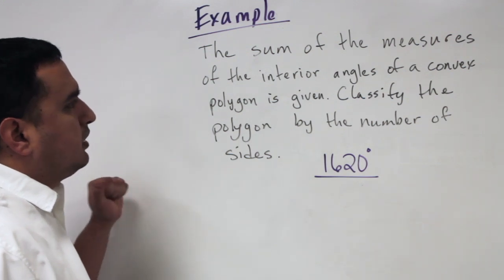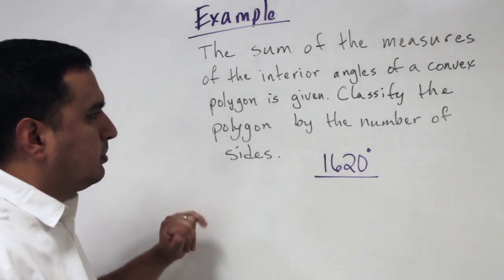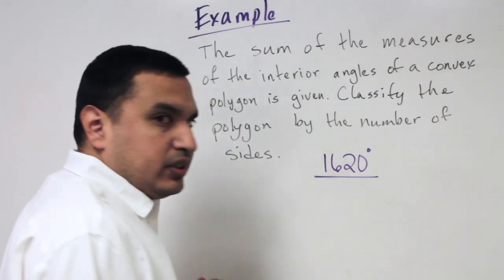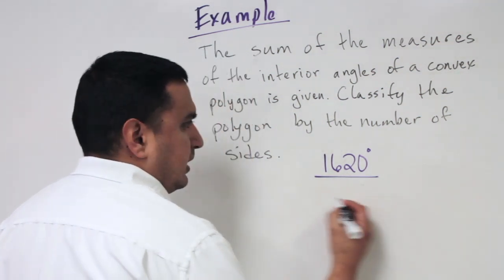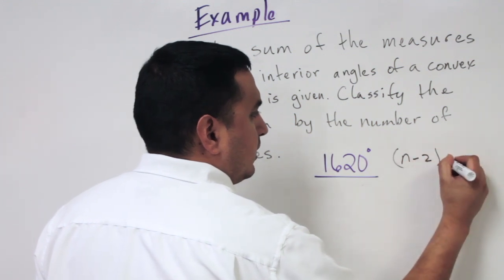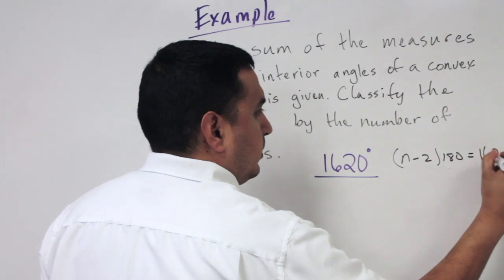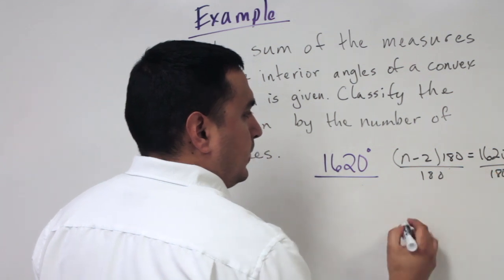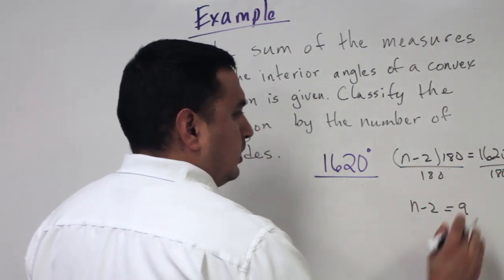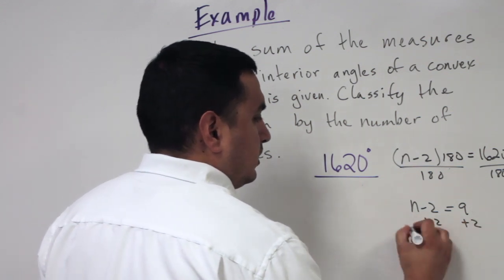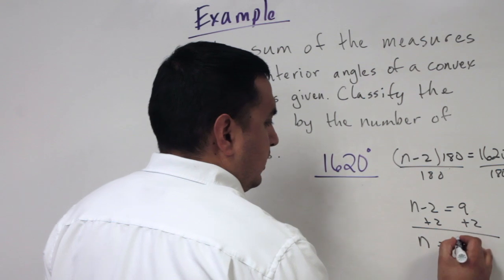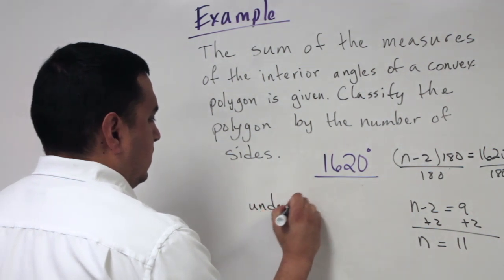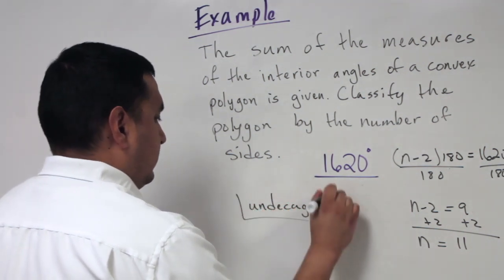Given that the sum of interior angles is 1620°, find the number of sides. Set (n−2) times 180 equal to 1620. Divide by 180 to get n−2 equals 9. Add 2 to both sides: n equals 11. An 11-sided shape is called an undecagon.